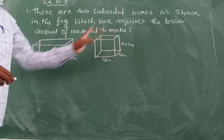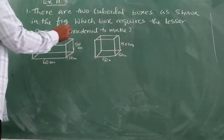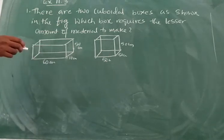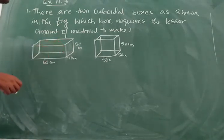Length also 50, breadth also 50, height also 50. So now we have to find out which one will take lesser amount of material, which box requires lesser amount of material. That means we need to find out the total surface area of both the solids here.